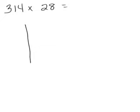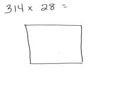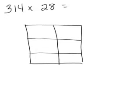With lattice multiplication you draw a box and put rows and columns in your box, then write your digits or numbers that you're going to multiply along the edges.